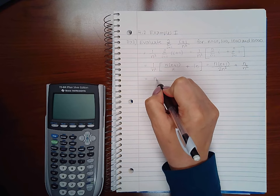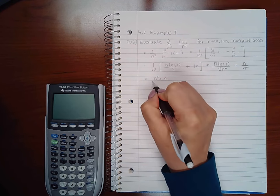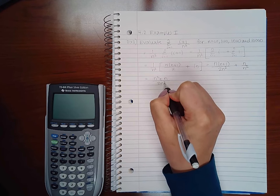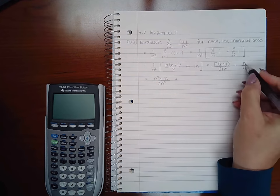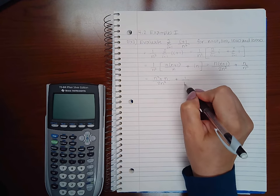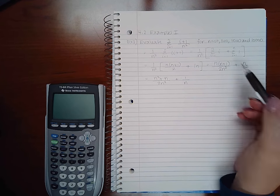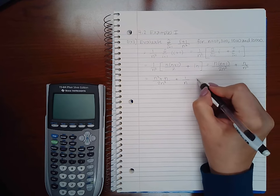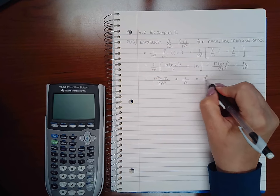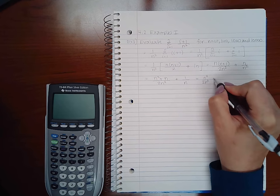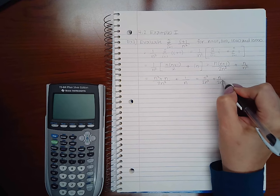So I want 2n squared plus n over 2n squared, and then here I can reduce by n, I get 1 over n. I could have also reduced this by n before I distributed. Either way, you can reduce afterward as well if you want to. So we'll still get the same value eventually in the end.